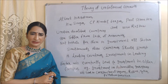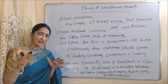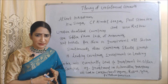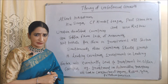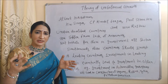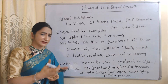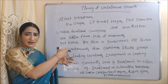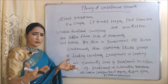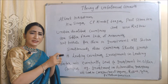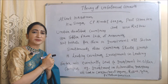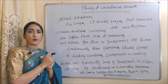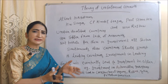According to balanced growth theory, we need to simultaneously invest in all sectors. But underdeveloped countries already suffer from a lack of resources — it is not possible for them to invest in all sectors simultaneously. That's why, according to the theory of unbalanced growth, underdeveloped countries need not invest simultaneously in all sectors. They only need to invest in leading sectors.